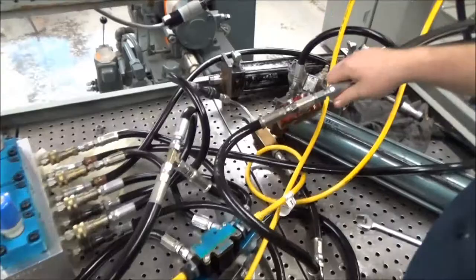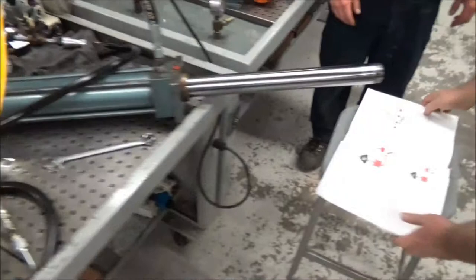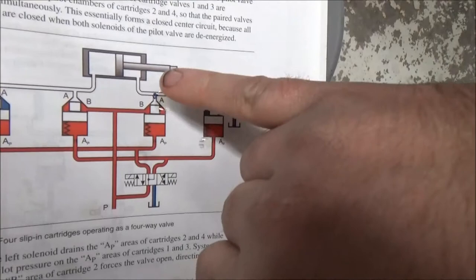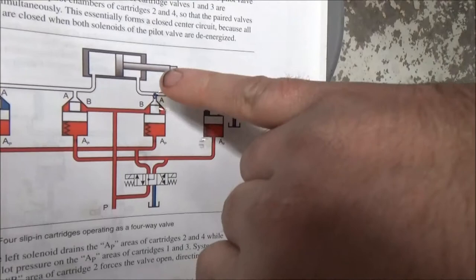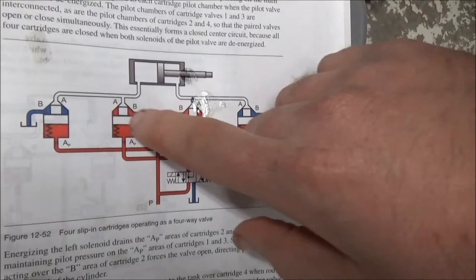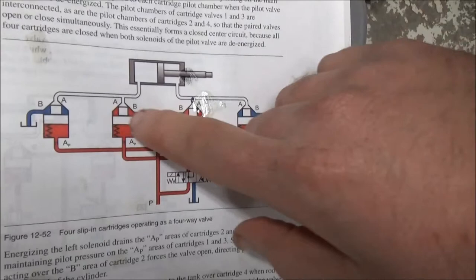We have to add this check valve right here, which is right here on our diagram, because the pressure intensification from the rod is 2 to 1 ratio, so 200 psi here, 400 psi here, and it was actually enough to push open the cartridge valve, and it would regenerate fluid through here and actually speed up the cylinder.